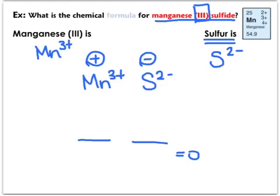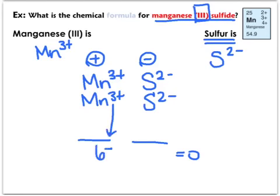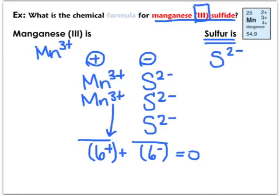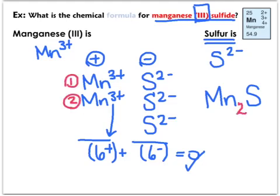Adding another sulfur gives negative four — that still doesn't balance with positive three. Adding another manganese gives a total of plus six for positives. With negative four, that's still not balanced. But adding a third sulfur gives a total of negative six, and positive six plus negative six equals zero. Writing the formula, I write the symbols Mn and S. There were two manganese and three sulfurs, so the chemical formula is Mn2S3 for manganese three sulfide.